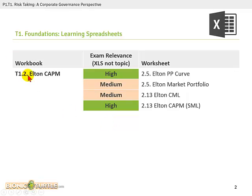There is a single associated workbook for those that happen to be using learning spreadsheets. That workbook is T1.2 Elton CAPM, that's short for Capital Asset Pricing Model. Sometimes we just call that the CAPM model. And then in that workbook, there are four worksheets.